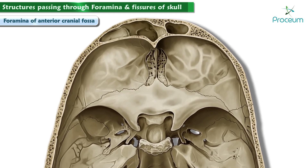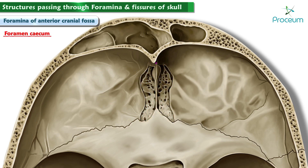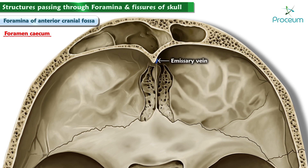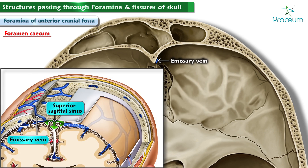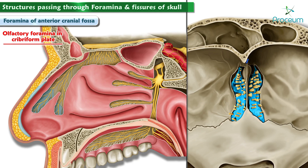There are only two foramina to mention in the anterior cranial fossa. The foramen cecum lies in the frontal bone, just anterior to the ethmoid bone. It allows passage of an emissary vein from the nasal cavity that drains into the superior sagittal sinus, part of the venous drainage system of the brain. The olfactory foramina in the cribriform plate form an important part of the pathway of the first cranial nerve, the olfactory nerve. Nerve endings responsible for our sense of smell pass through these holes in the cribriform plate of the ethmoid bone.